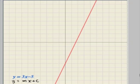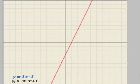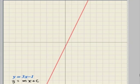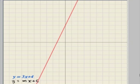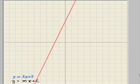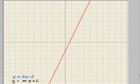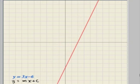There's different values: 3x minus 5, 3x minus 3, 3x minus 1, 3x plus 3. So all of these lines have the same gradient, they've all got a gradient of 3, they're all parallel to each other.